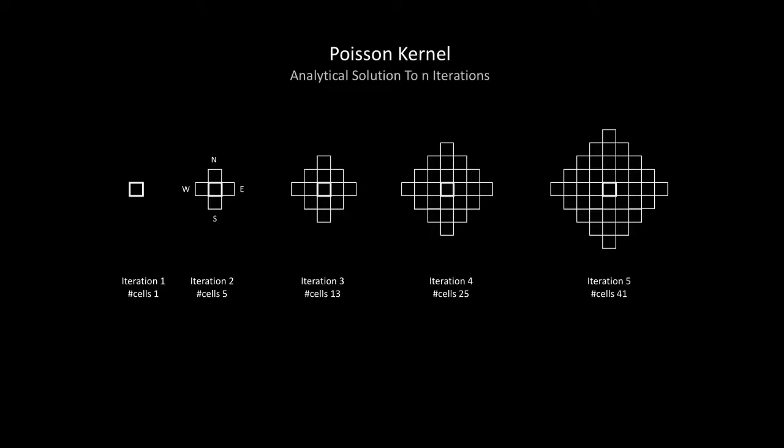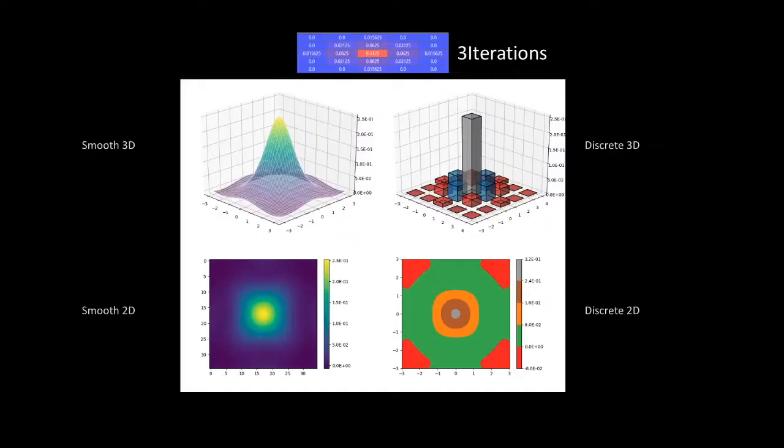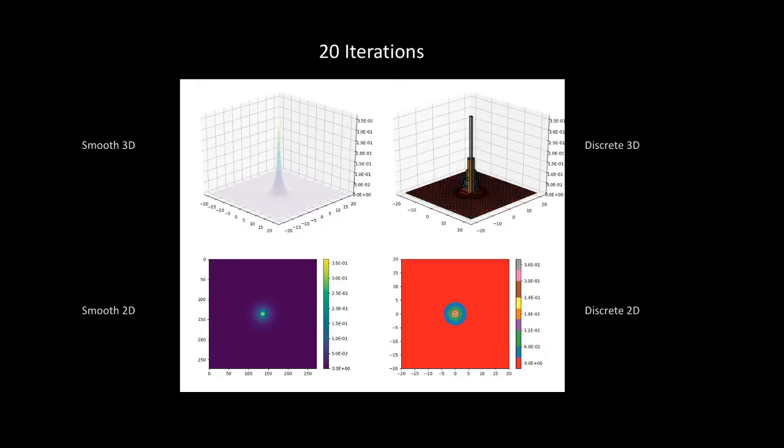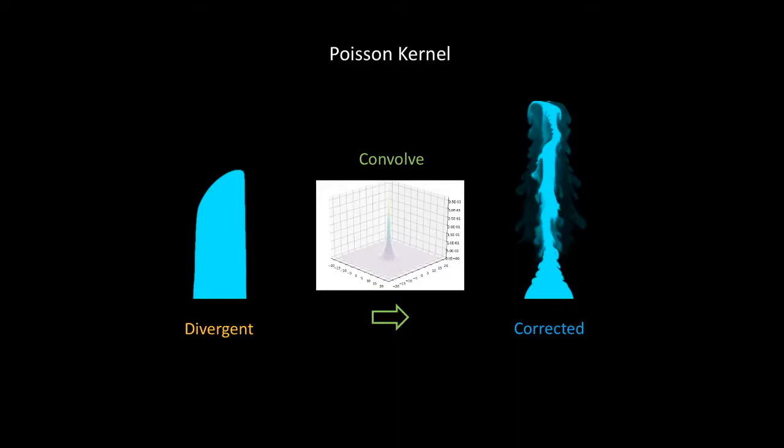For example, for iteration three, our kernel would look like something like this. And these are different visualizations of the kernel to give you a better idea of how it looks. As the iteration number increases, we get better and more smooth approximation of the kernel. Now having that kernel, we can convolve the divergence to get the pressure we need for the projection step. That's good.